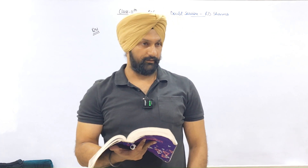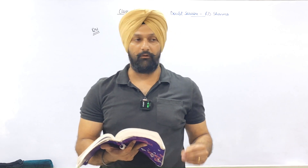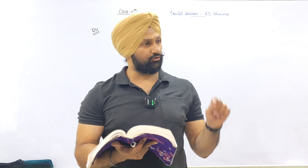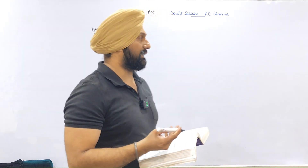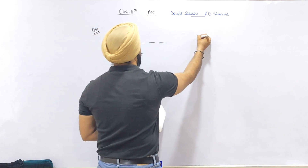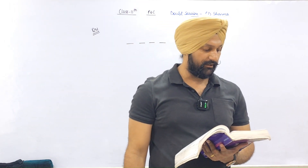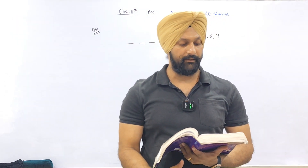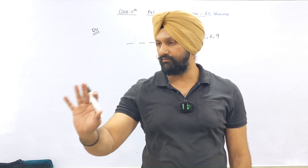Question number 31: a customer forgets a four-digit code for an ATM. He remembers that the code consists of 3, 5, 6, and 9. Find the largest possible number of trials necessary to obtain the correct code — in other words, how many trials can be done to get the correct code? That is, the maximum number of trials.